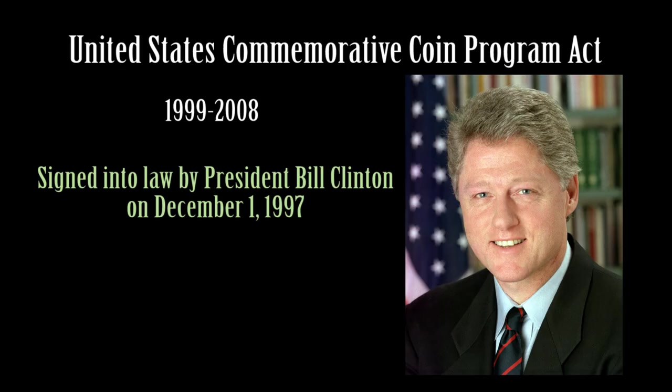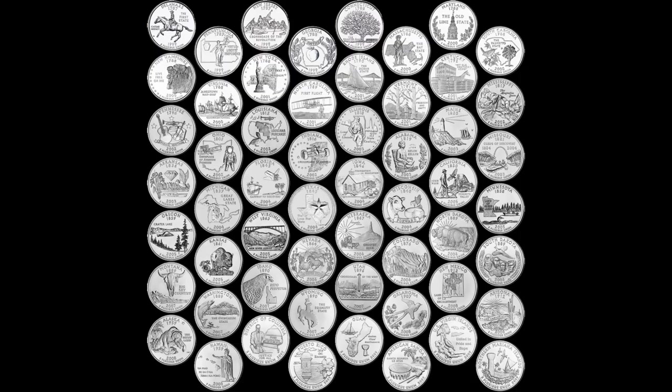In 1997, Congress issued the United States Commemorative Coin Program Act, which was signed into law by then President Bill Clinton on December 1, 1997, which established the 50-state quarter program. Beginning in 1999, the long familiar eagle design was replaced with a design emblematic of each of the 50 states. Five coins were issued each year between 1999 and 2008, or one every ten weeks. The coins were issued in the order that the states ratified the Constitution.